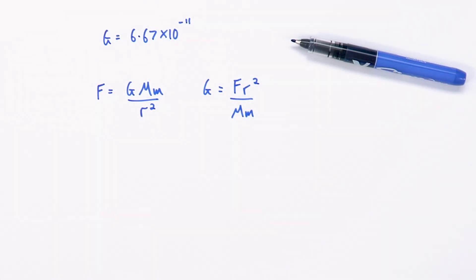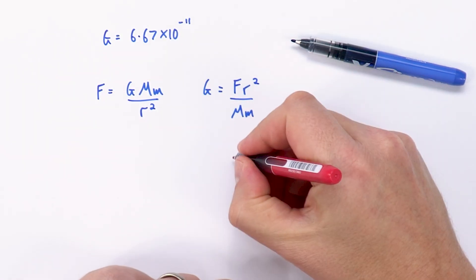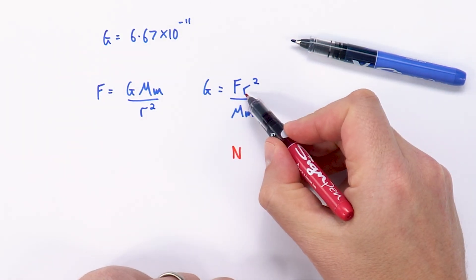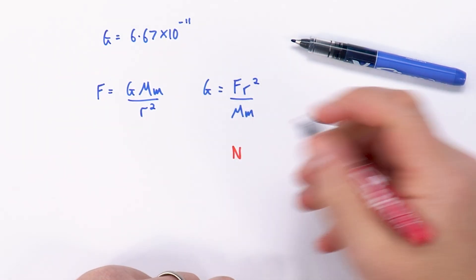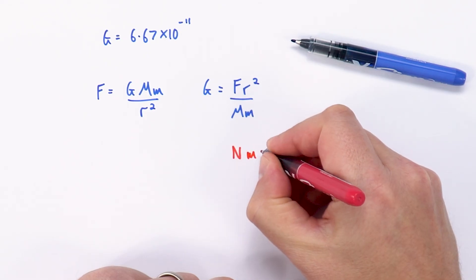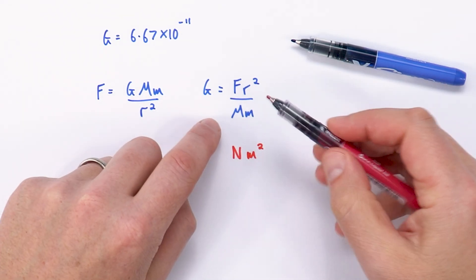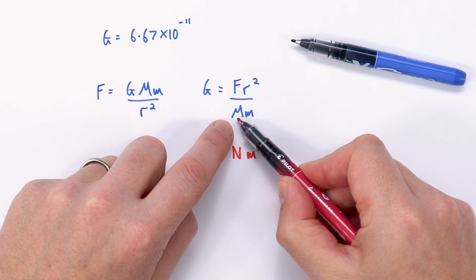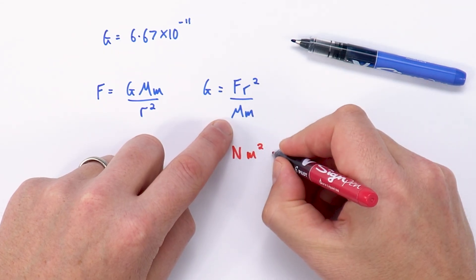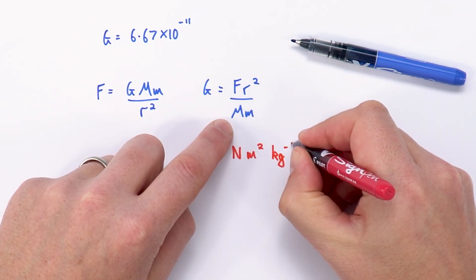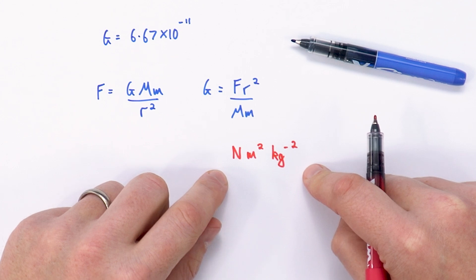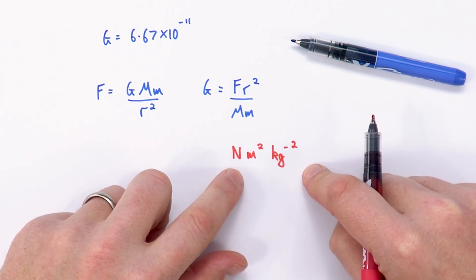So I'm just going to go to a different colour for my units. Force is measured in newtons, the distance R is going to be measured in metres, so R squared is going to be metres squared. And then we've got kilograms times kilograms so that's going to be kilograms to the minus 2. And so that's often the standard way of actually giving the units for big G.